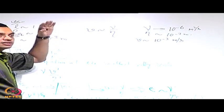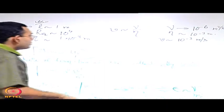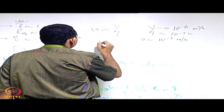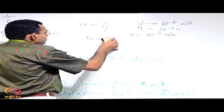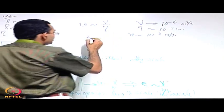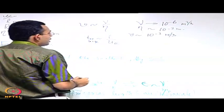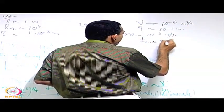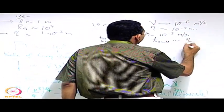The system scale velocity u0 is governed by the system scale Reynolds number and is quite large. The time scale for the system or the large eddy is of the order of L by u0. For the small eddy, that is the Kolmogorov time scale — and this V is the Kolmogorov velocity scale — so the time scale for the small eddies is of the order of eta by V. It is possible to have an estimate of the time scales, length scales, and velocity scales.